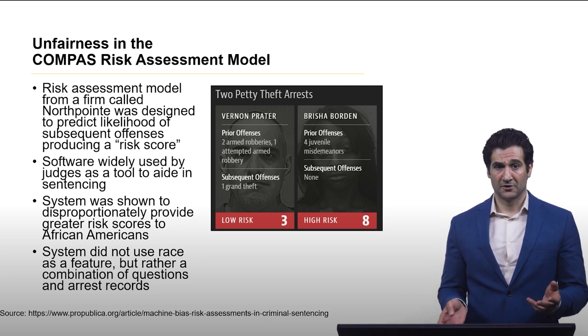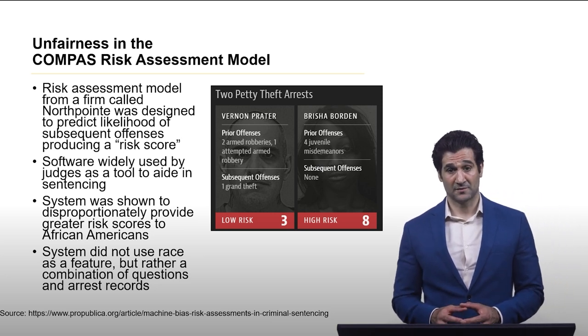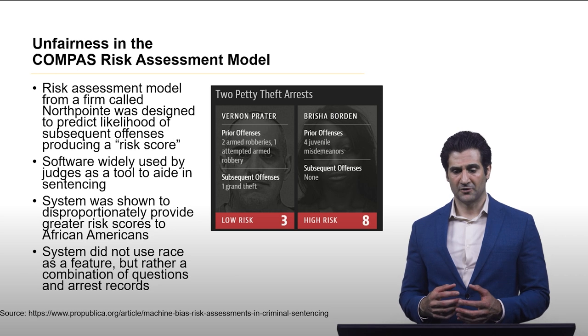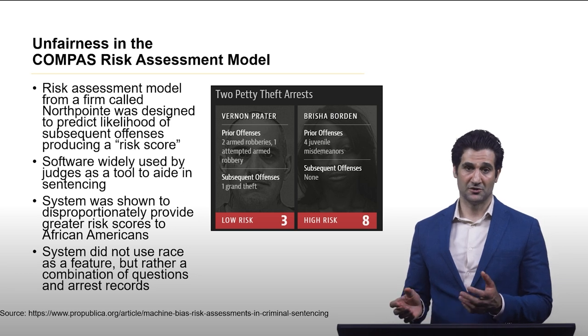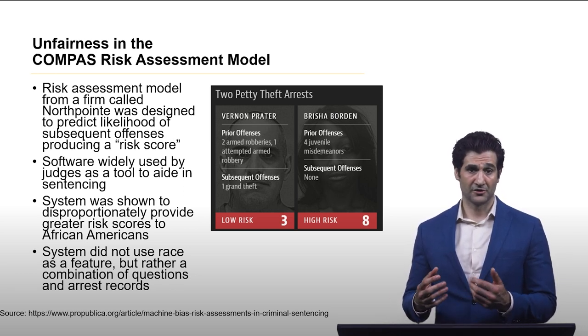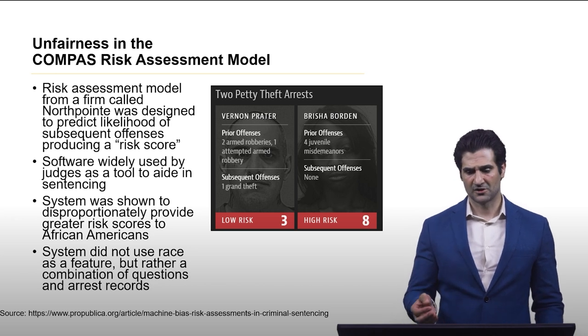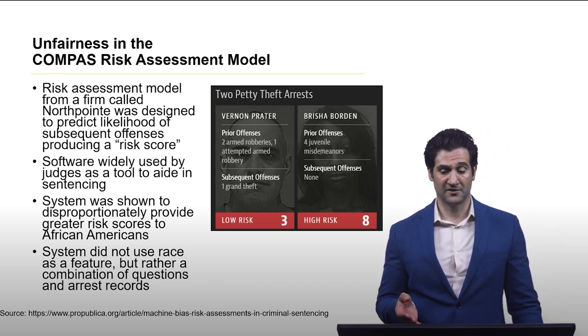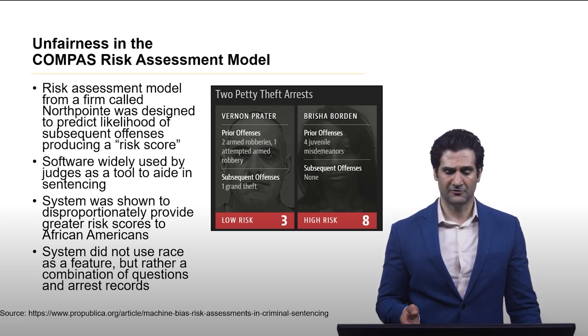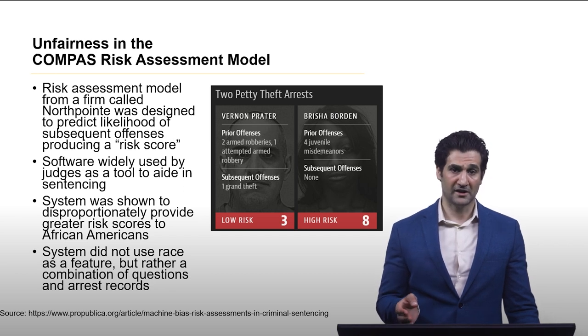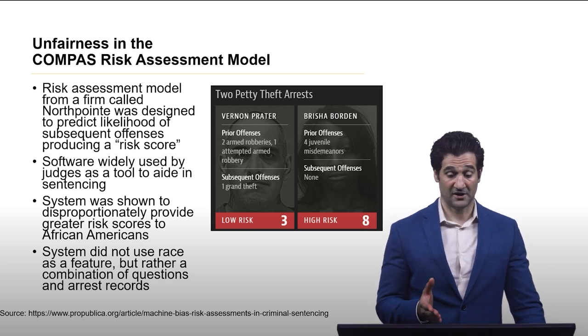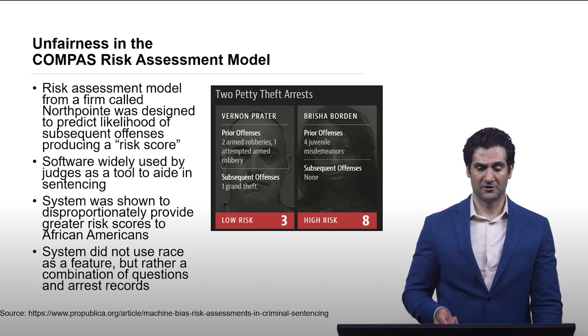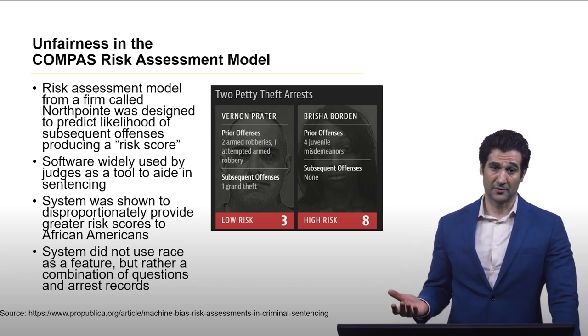One example is the COMPAS risk assessment model that was used as a proxy to quantify recidivism risk, and judges would use this to determine if an offender was likely to become a repeat offender. In the case shown here we have an African-American female who had about four juvenile misdemeanor offenses who actually was assigned a higher risk rating compared to a white male whose prior offenses included armed robbery, and in the outcome the white male actually did become a repeat offender.